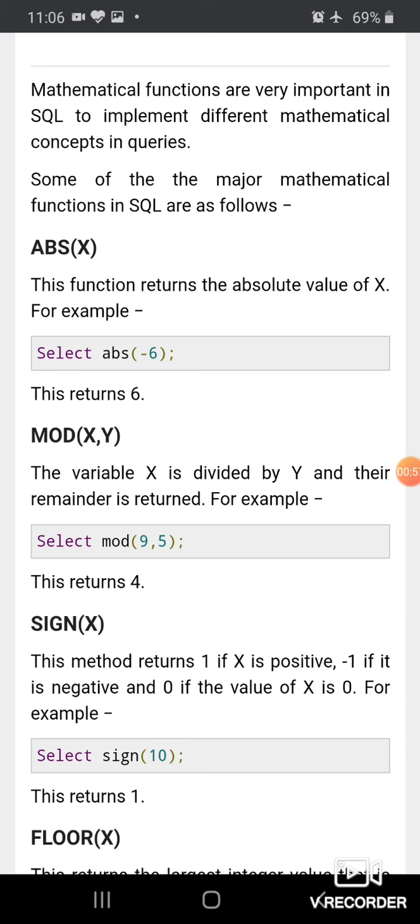Some of the major mathematical functions in SQL are as follows: First is ABS(X). This function returns the absolute value of X, the integer which is written in parenthesis.